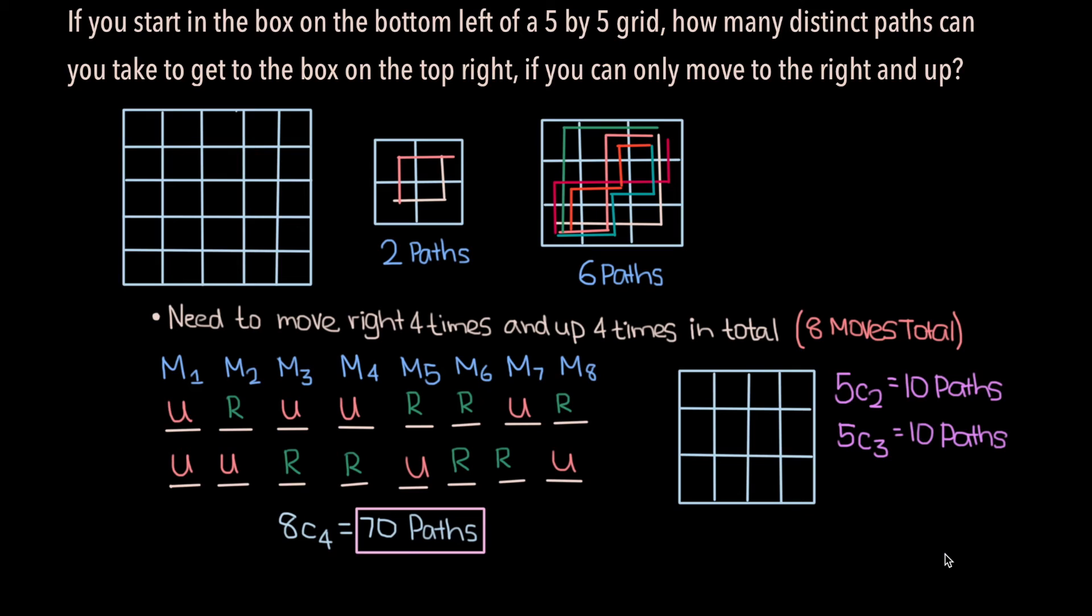And I just want to end this video off by clarifying that 5 choose 2 and 5 choose 3 being the same is not a coincidence. This pattern can actually be generalized, and that generalization is if you have two numbers a and b that sum up to n, then n choose a is equal to n choose b. 2 and 3 sum up to 5, so 5 choose 2 is equal to 5 choose 3.